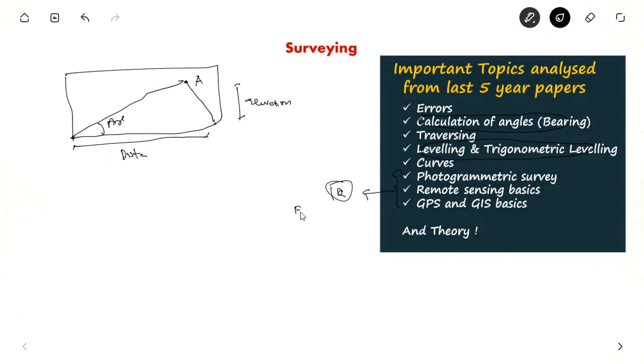And in engineering service exam, at least 2 to 3 questions come in objective paper and one question comes in GPS, GIS basics, often in conventional paper. You should not ignore theory in surveying because at least one question will come in GATE exam, which will be very easy. If you have a glance of all the subjects covered in surveying, just the basics, theoretical part, you can answer that question very easily.